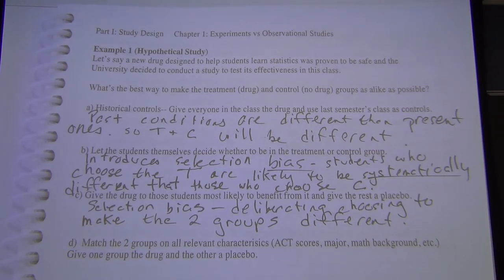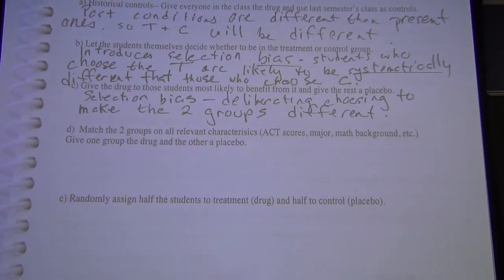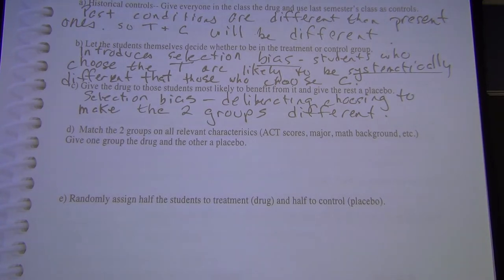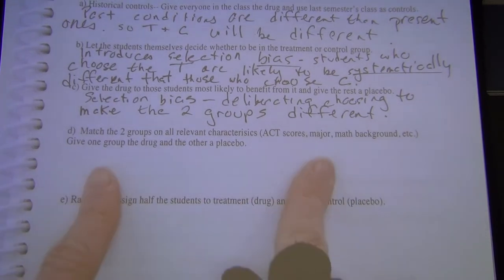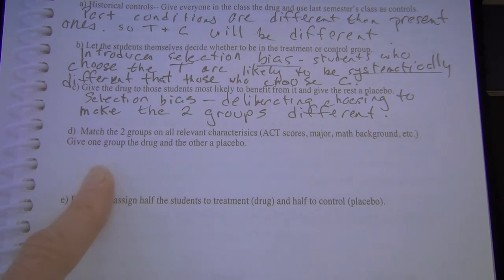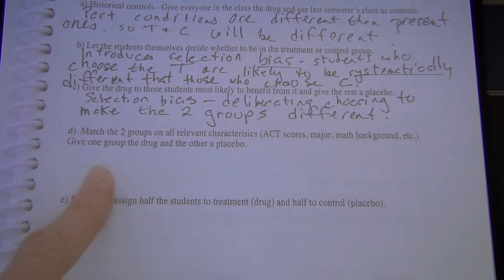This illustrates that humans have systematic preferences — we're hardwired to have them, many of which we're completely unaware of. Unless we introduce random assignment, those systematic preferences persist. The final assignment step must be random.